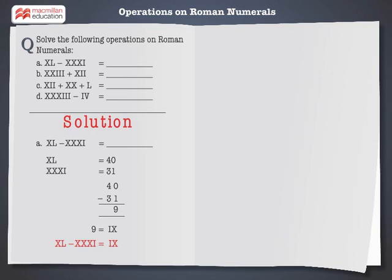Next, first we convert these Roman numerals into Hindu-Arabic numerals. XXIII is equal to 23 and XII is equal to 12. Now add 23 and 12. The sum of 23 and 12 is 35.